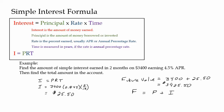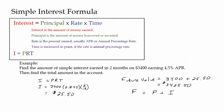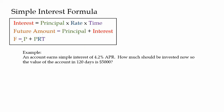So the future value is our principal plus the interest that we earned. The future value formula is: future value equals principal plus principal times rate times time — which is your interest. What I'm trying to do is help you not have to remember so many formulas. If you memorize principal times rate times time as your interest and add it back in with your principal, just use your common sense and don't try to memorize formulas without understanding what they mean.